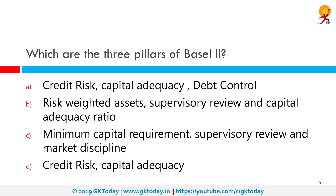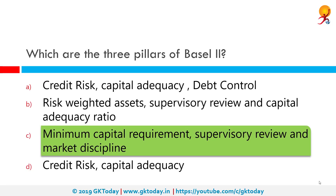Which are the three pillars of Basel 2? The correct answer is: minimum capital requirement, supervisory review, and market discipline. Basel 2 uses a three-pillar concept — the first being minimum capital requirements, which addresses risk; the second is supervisory review; and the third is market discipline.